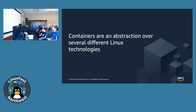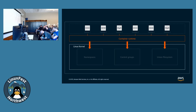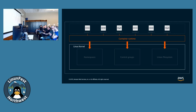Containers are an abstraction over a bunch of different Linux technologies. The underlying technologies that power containers can be mixed and matched and used independently of containers in other useful ways. We're going to talk about cgroups and namespaces, which are pretty core to containers. We're also going to talk about a union file system, which is usually used when talking about container images, and look at an implementation on top of the overlay file system.